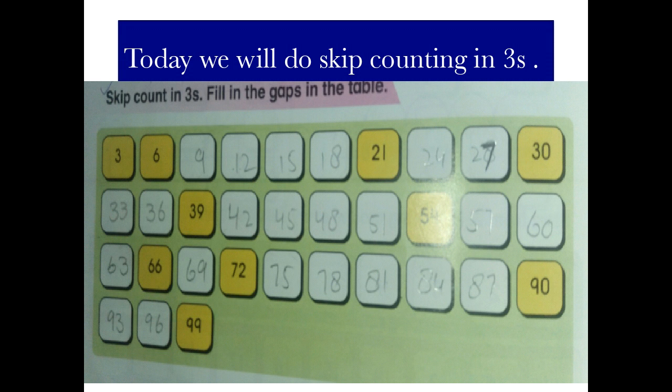So class हम स्टार्ट से again स्टार्ट से करते हैं, 3 plus 6, 6 plus 3, 9. 9 plus 3, 12. 12 plus 3, 15. 15 plus 3, 18. 18 plus 3, 21. 21 plus 3, 24. 24 plus 3, 27. 27 plus 3, 30. 30 plus 3, 33. 33 plus 3, 36. 36 plus 3, 39. 39 plus 3, 42. 42 plus 3, 45. 45 plus 3, 48. As we can do, as we will do all whole exercise, in this way we will do whole exercise.